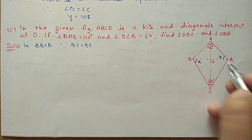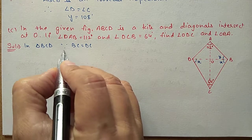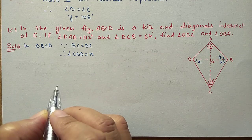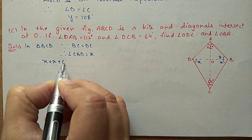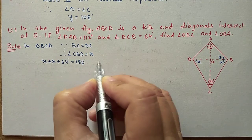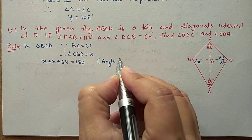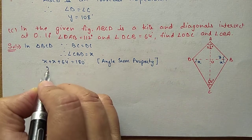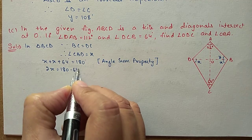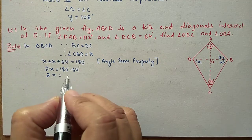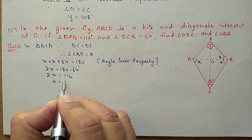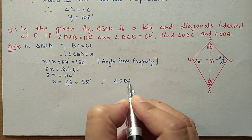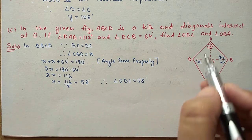Since BC equals DC, the base angles are equal, so angle CBD is also X. Now using the angle sum property: X plus X plus 64 is equal to 180 degrees. So 2X is equal to 180 minus 64, which gives 2X equal to 116 degrees. X value will be 116 divided by 2, equal to 58 degrees. Therefore angle ODC is equal to 58 degrees.